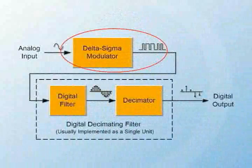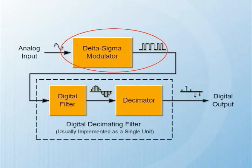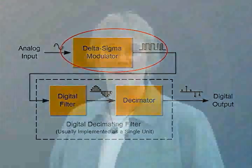This input signal is received by the modulator and it's digitized into a pulse train coming out of the modulator. That pulse train goes into the digital decimator filter. The pulse train frequency we'll call the sampling frequency for right now.